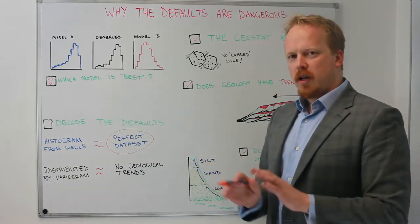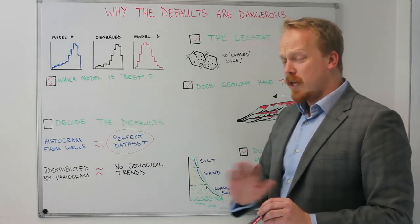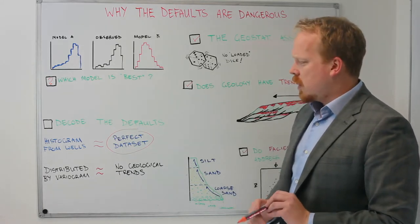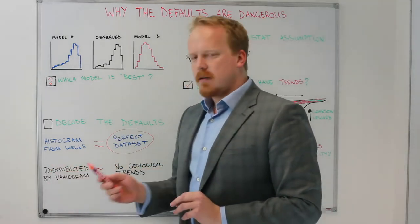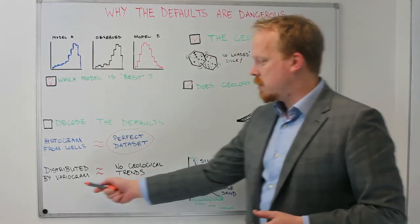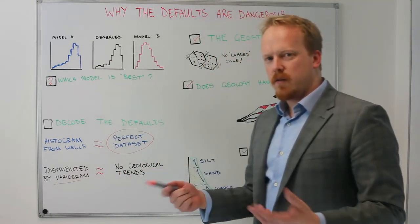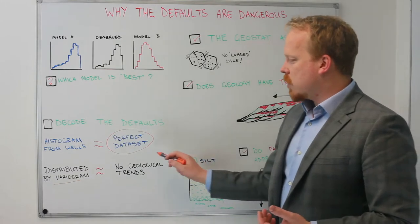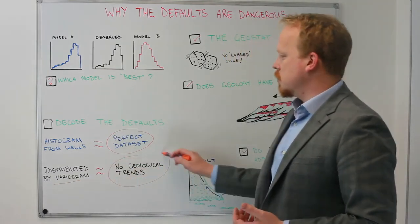We have got a good distribution of random samples from your reservoir and they all line up. If then we distribute that input distribution, we distribute the observed data just using the variogram within the FASHES perhaps, we are also invoking that there are no additional geological trends.